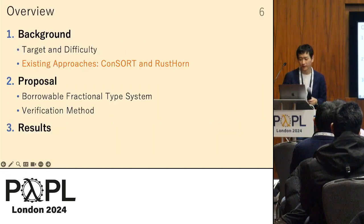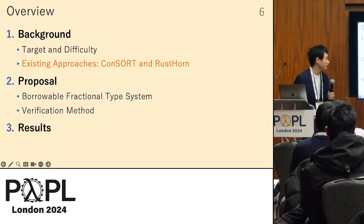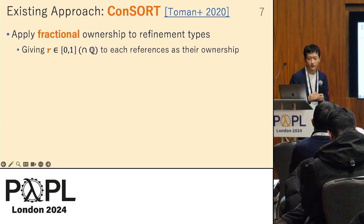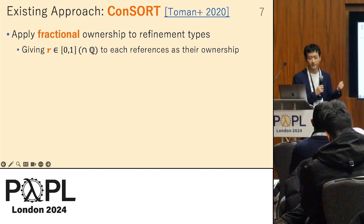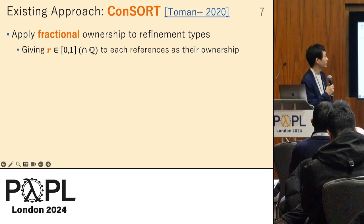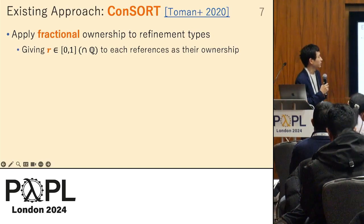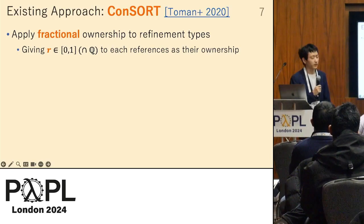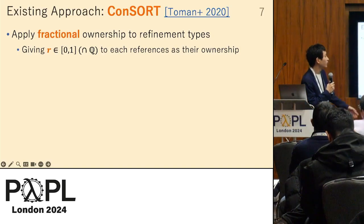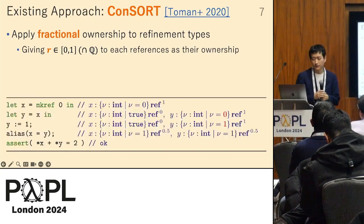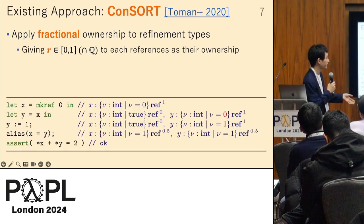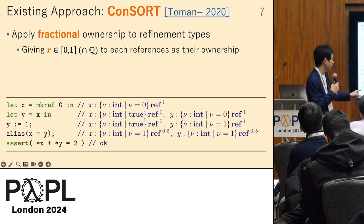The first approach to tackle this problem is Consort. Consort applies fractional ownership to refinement types, where a real number R is given to each reference as its ownership. R equals 0 means no ownership and R equals 1 means full ownership. This example program confirms that the sum of x and y equals 2.